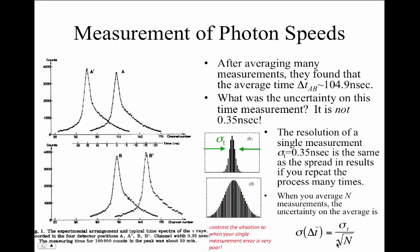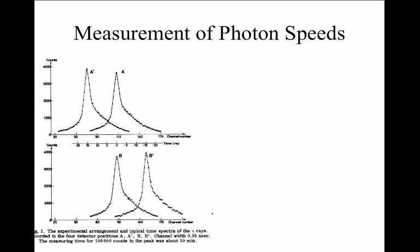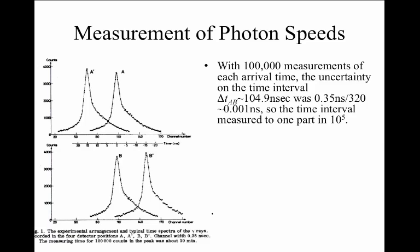Now, it's still helpful to have a good single measurement uncertainty, because if the histogram is very wide, then our uncertainty on where the location of the average is is considerably poorer than in the case when the distribution is very narrow. In this case, the quantity 0.35 nanoseconds is the full width half max for the many measurements of the photons to arrive at a single counter. With 100,000 measurements of each arrival time, the uncertainty on this quantity of delta t AB was about 0.35 nanoseconds divided by 320, because 320 is about the square root of 100,000. Therefore, the uncertainty on this time delta t was about 0.001 nanoseconds, so the time measurement was accurate to about one part in 10 to the fifth.